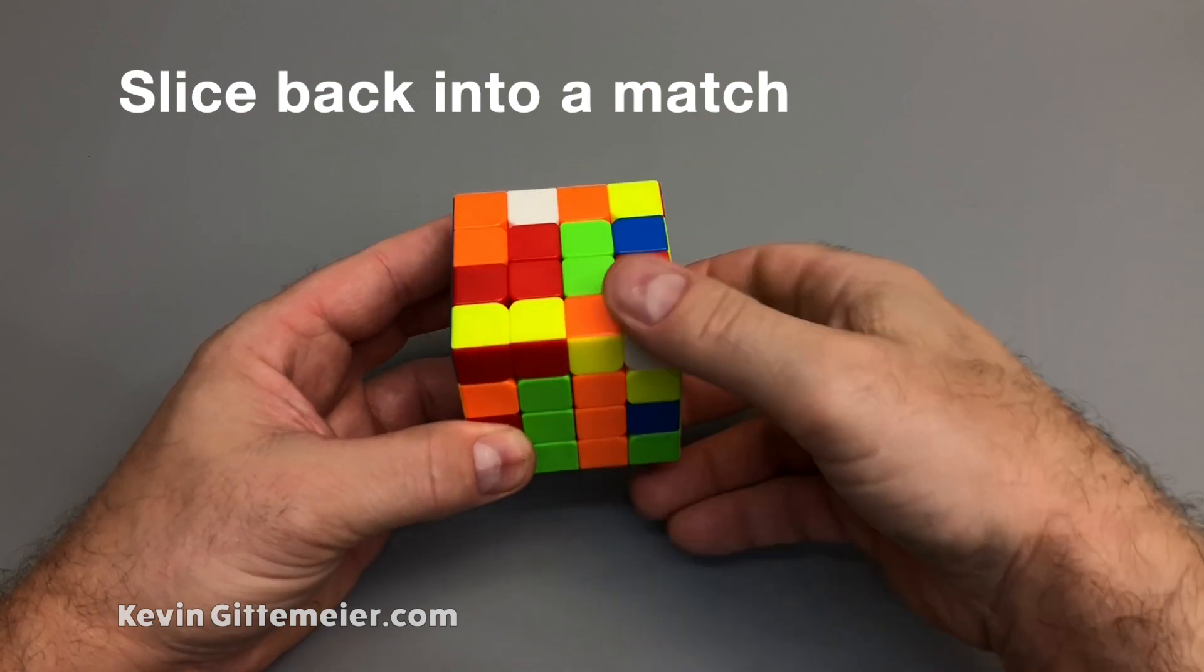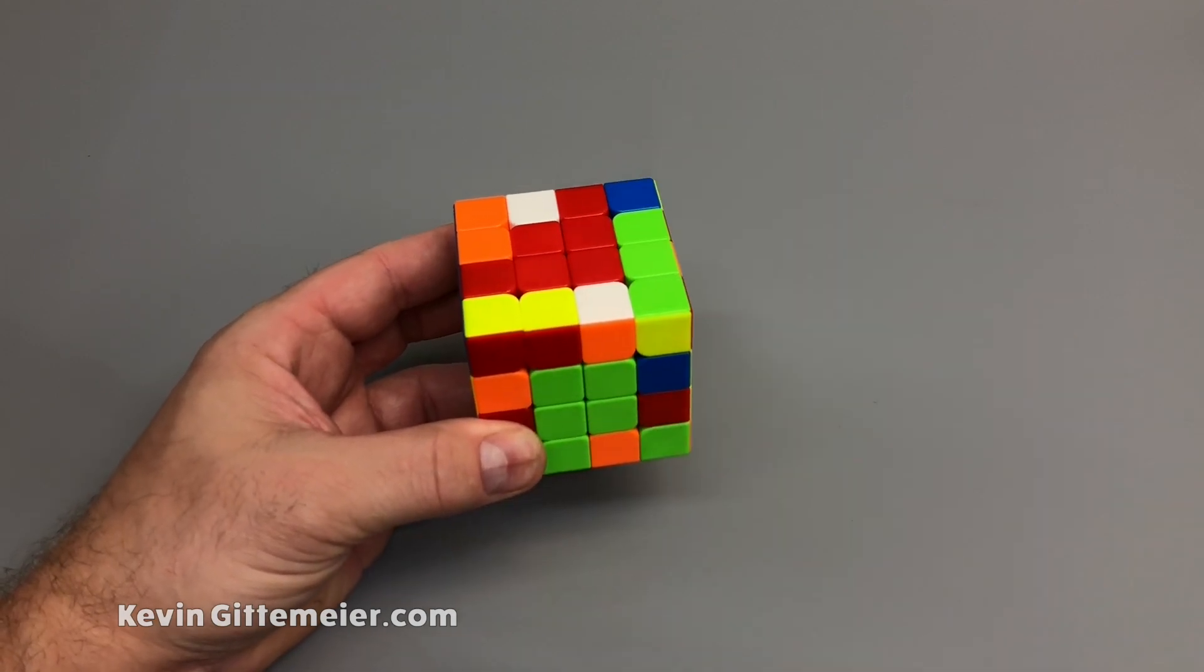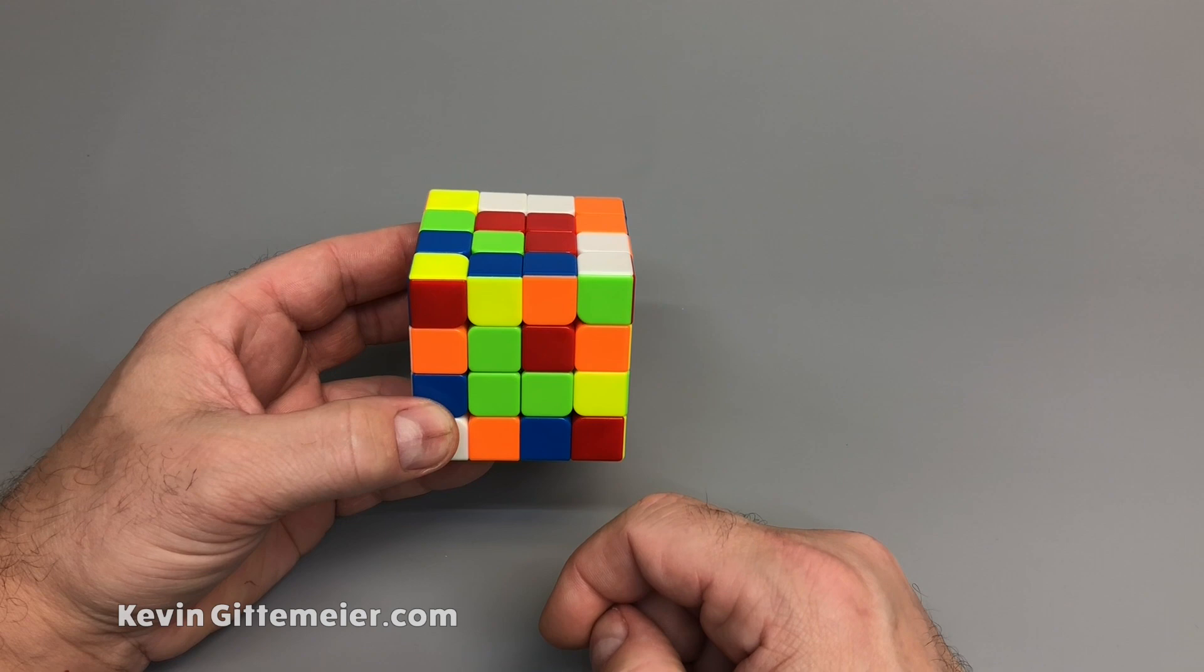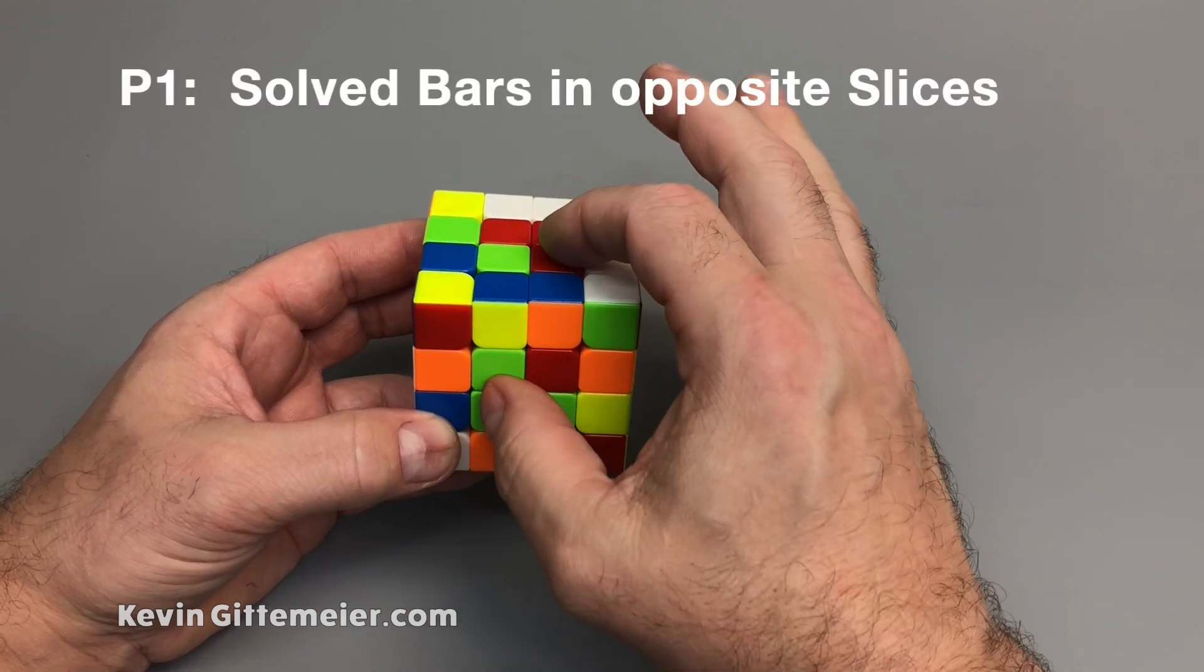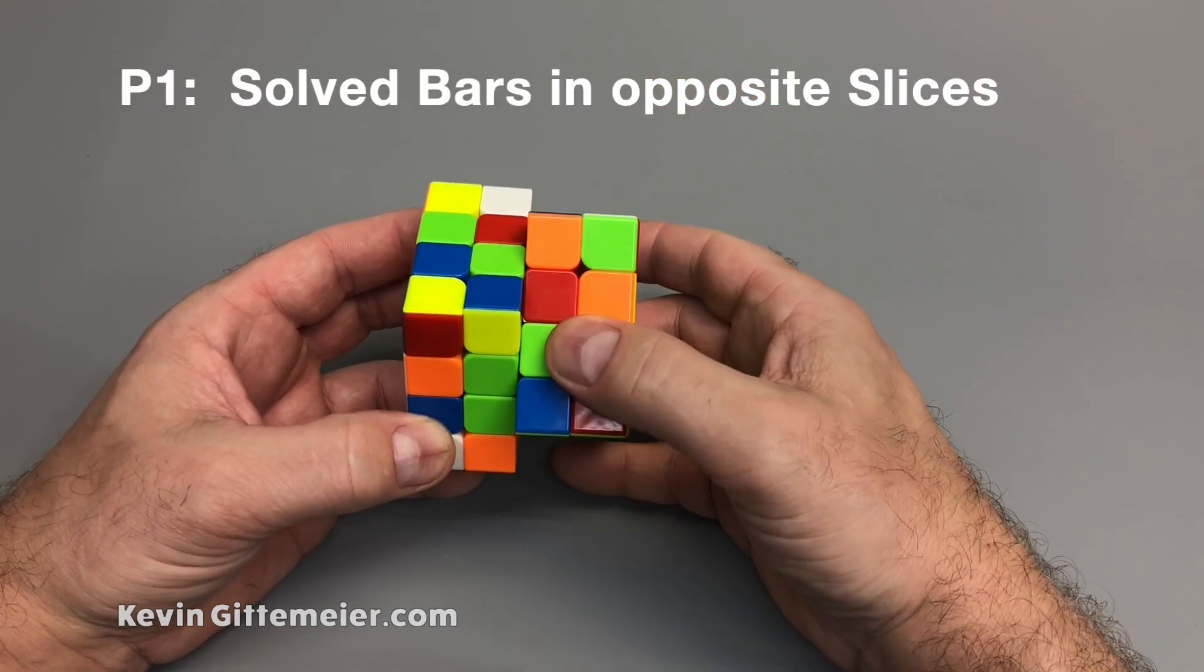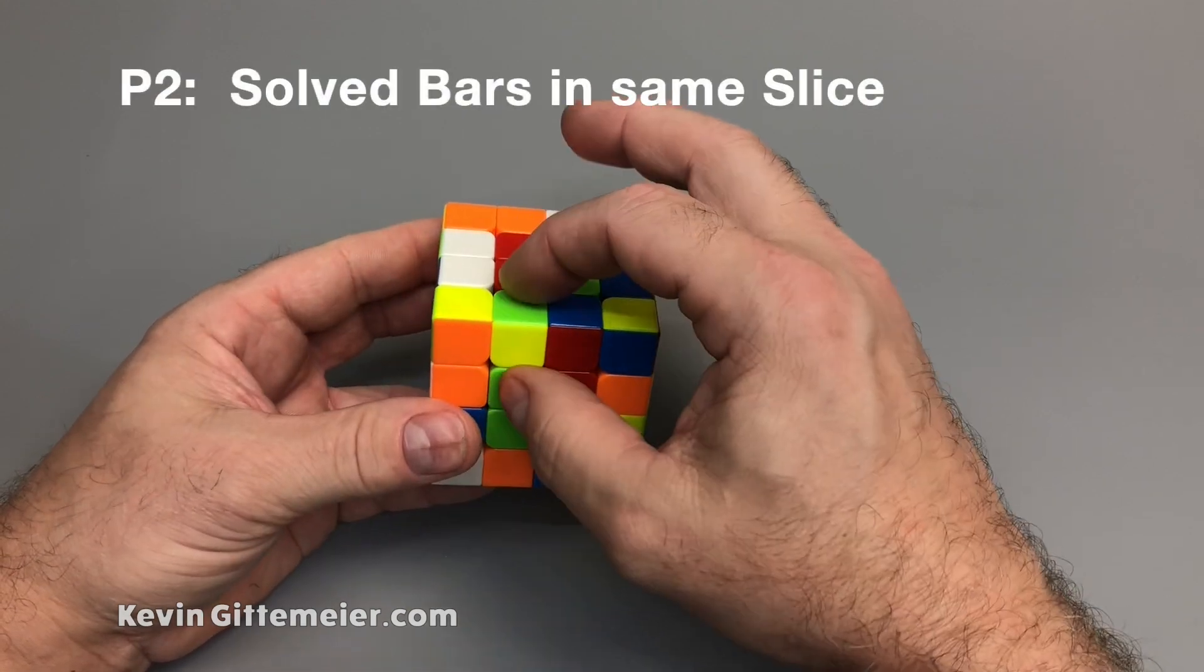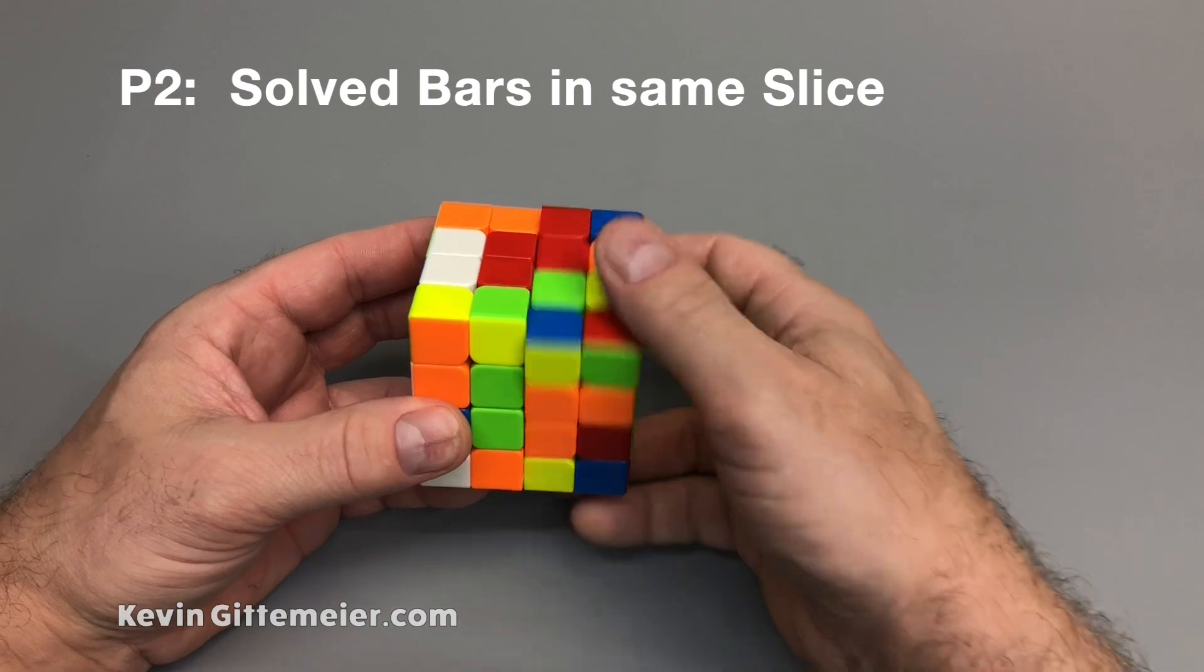Sometimes either principle can be used depending on the case. One may be more efficient than the other. Notice the solved bars in each of these situations. So for principle one, the two solved bars are in opposite slices of each other. But for principle two, the two solved bars are in the same slice.